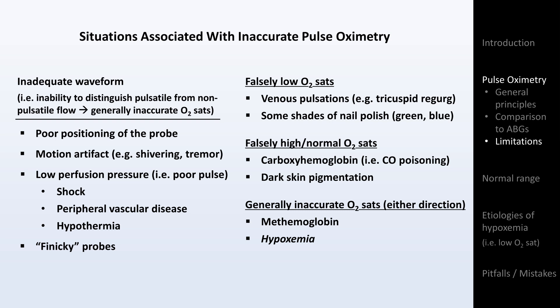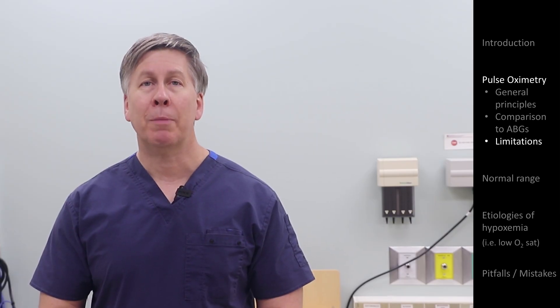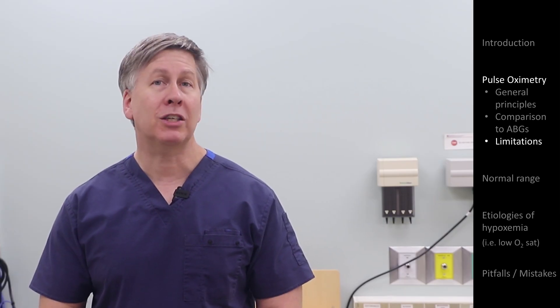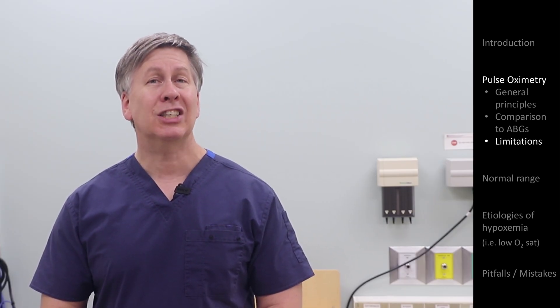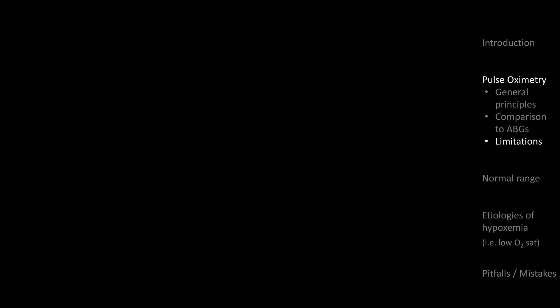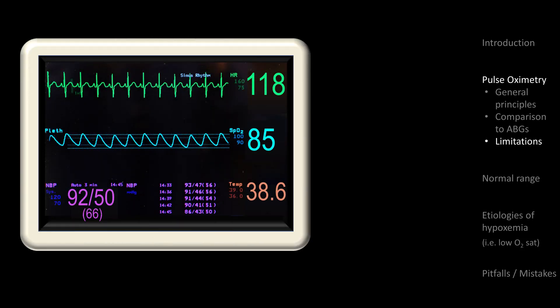Is there a particular O2 sat threshold below which the specific number becomes no longer helpful? Some papers and internet sources reference expert opinion that threshold is below 80%, while one meta-analysis puts it at below 70%. Even at modest hypoxemia, the range of error on pulse oximeters is surprisingly high, and the quantification of accuracy and precision of pulse oximeters is a complicated subject.